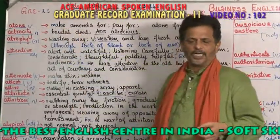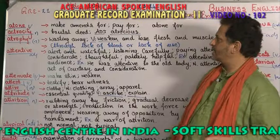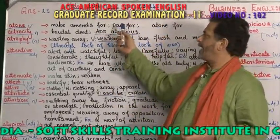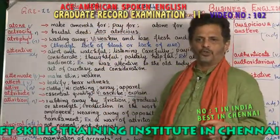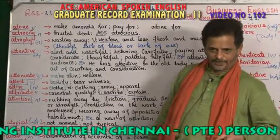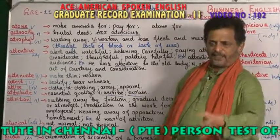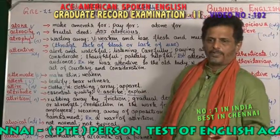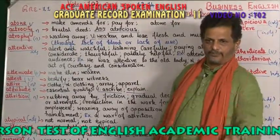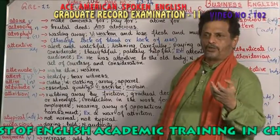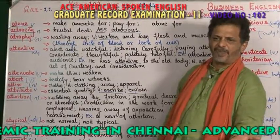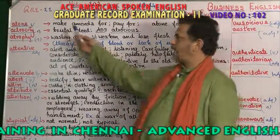What do you mean by 'atone'? Atone means make amends for, or pay for. For example, you made a mistake — you told a lie — and because of that you have to do something. You did not do your examination well, so you atone for what you have done.